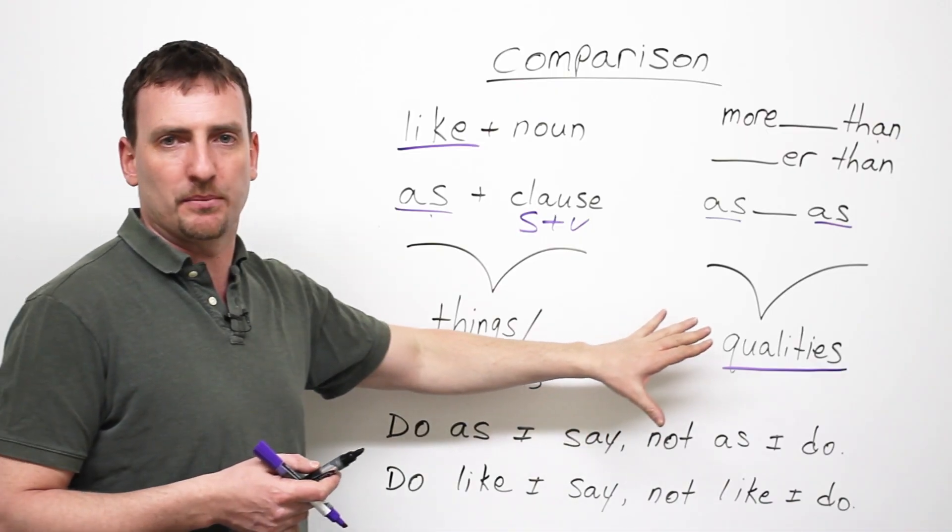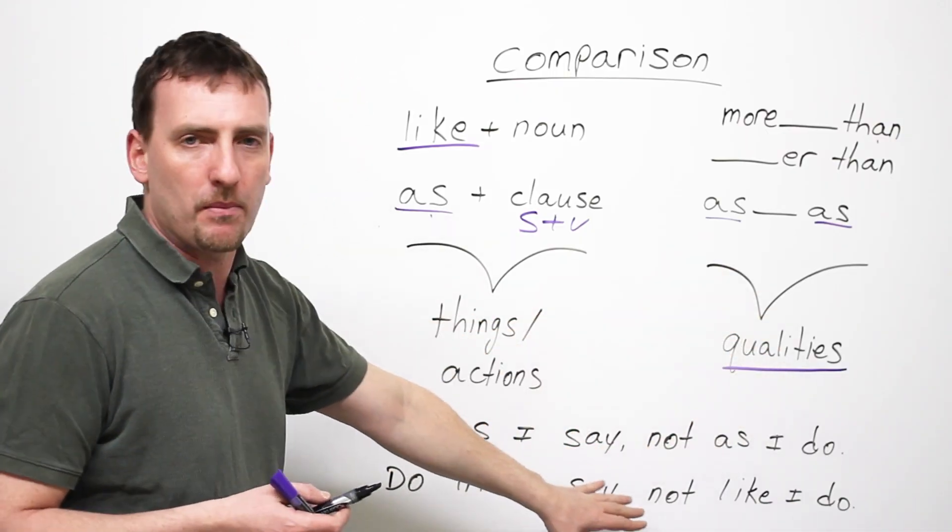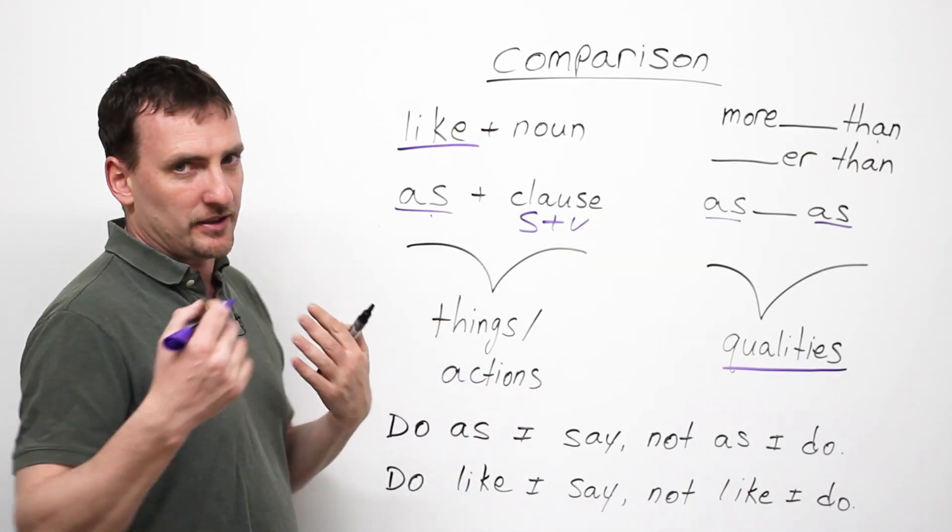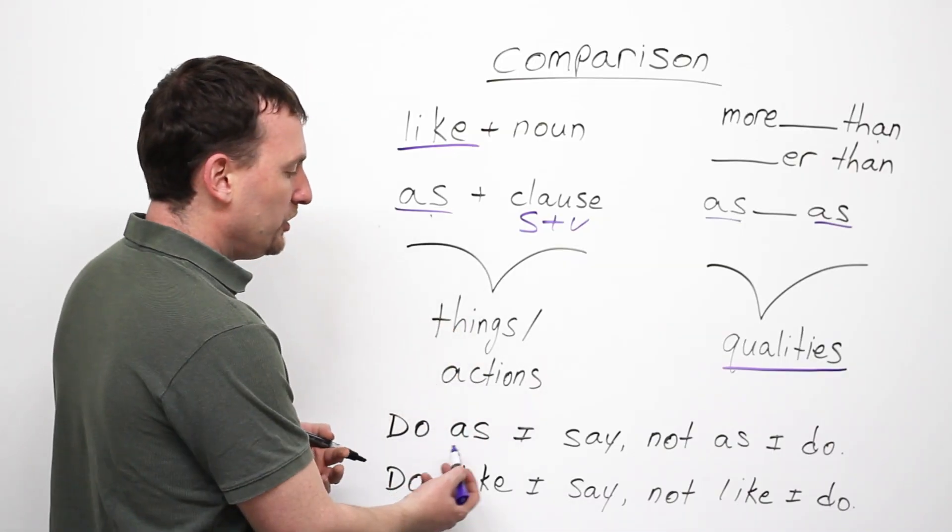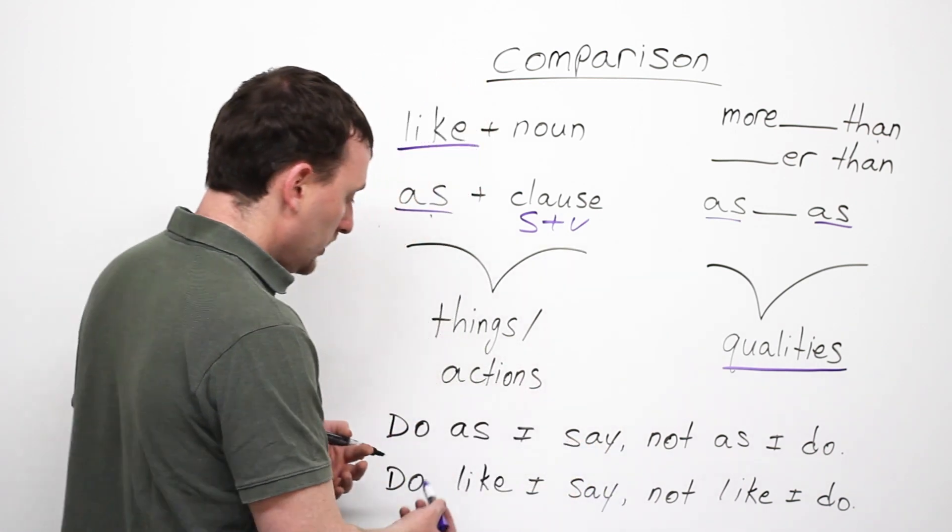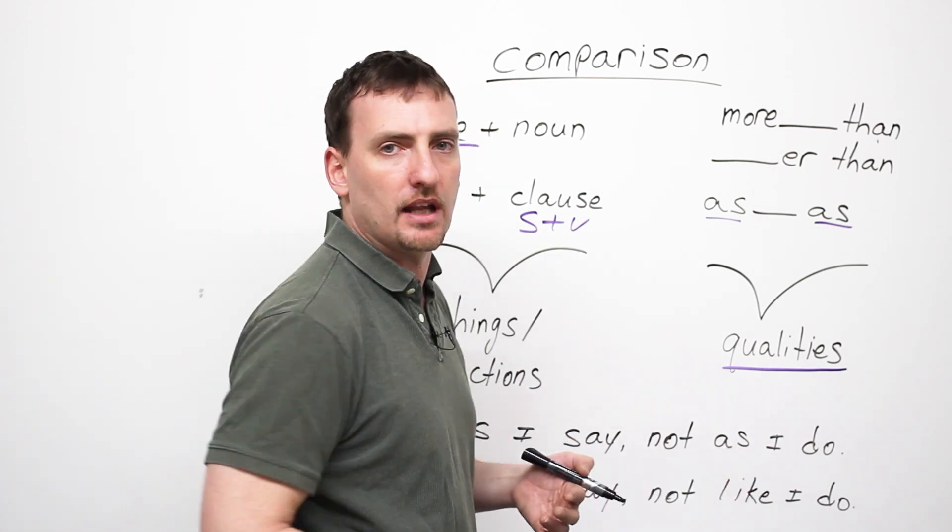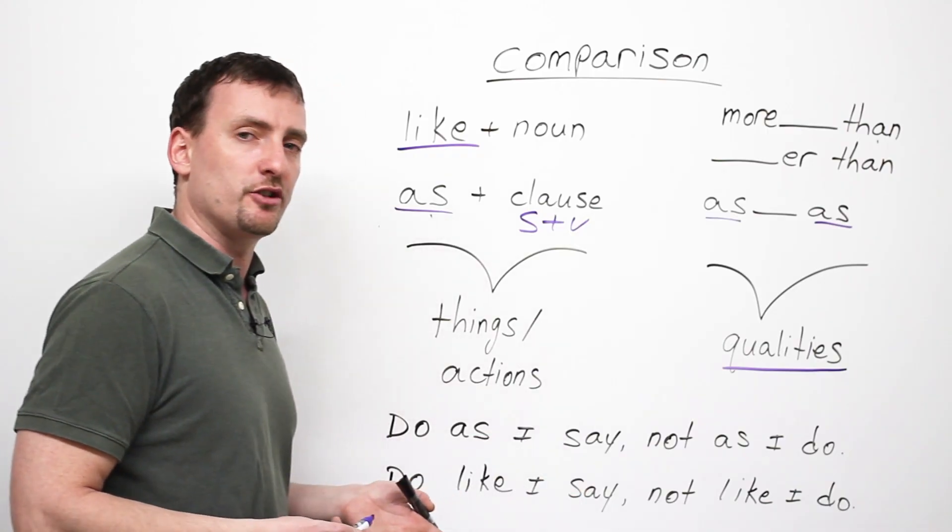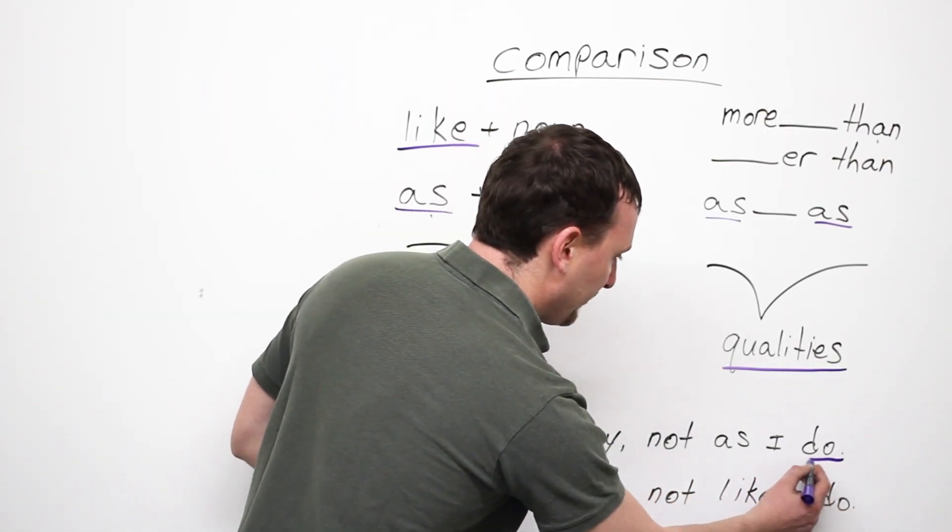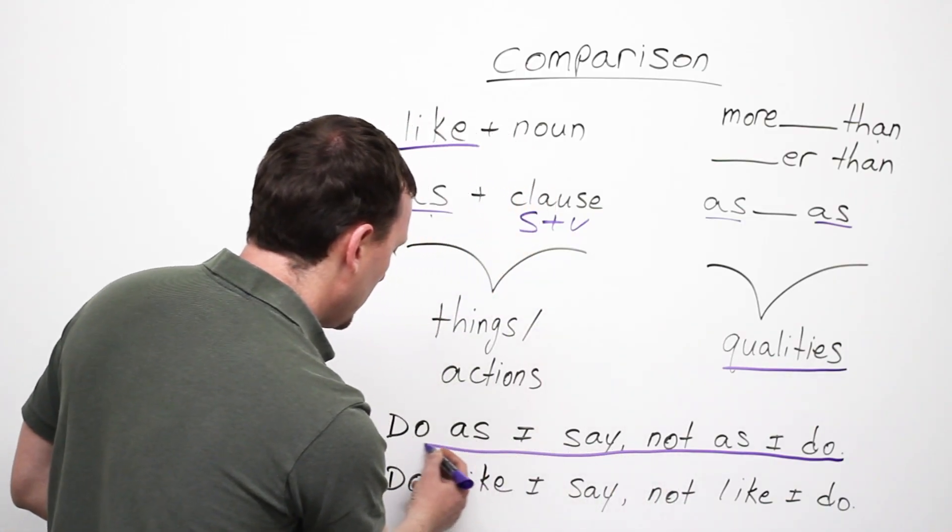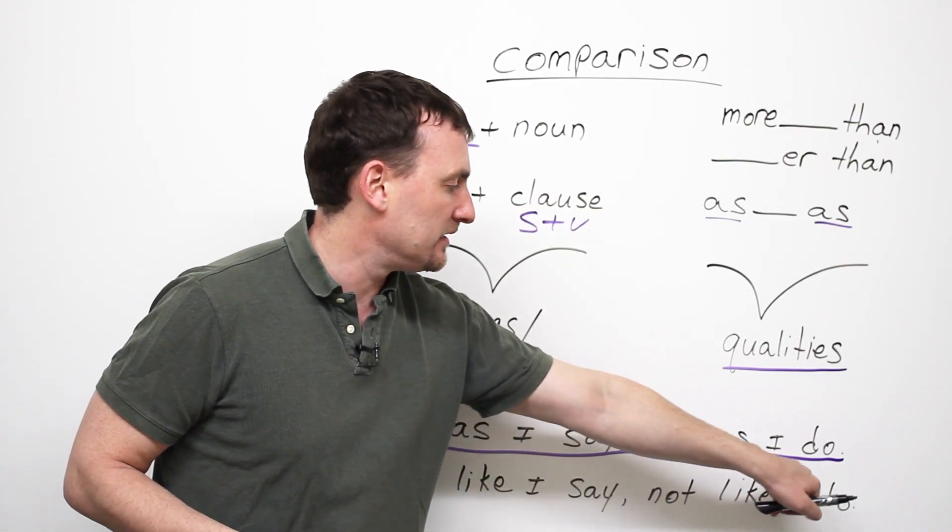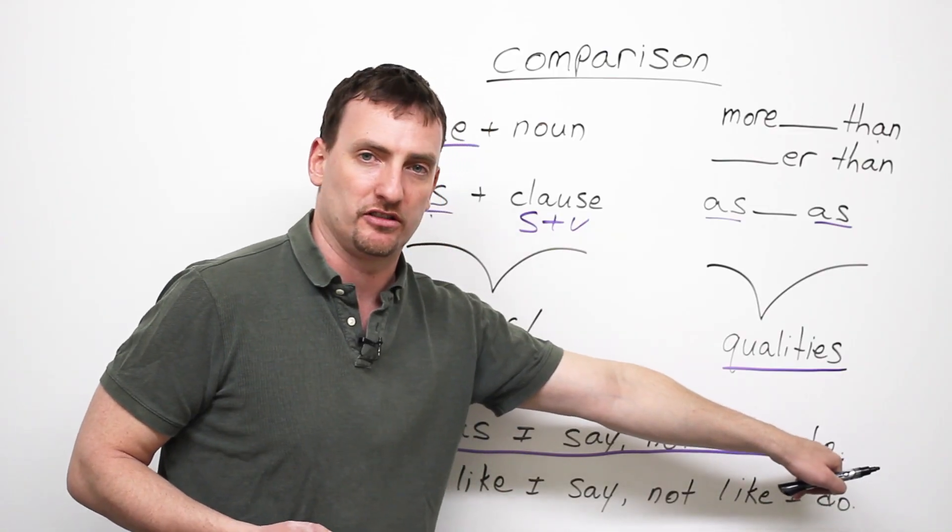So, before I give you some more examples, a very common expression in English. I want you to tell me which is the correct one. Do as I say, not as I do, or do like I say, not like I do. Which of these is correct? If you guessed the first one, you're right, because it's as, plus subject and verb, plus a clause.